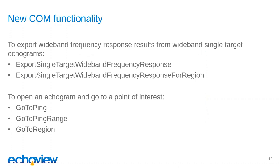Moving on to new COM functionality in EchoView 9: we have two new exports relevant to wideband frequency response — Export Single Target Wideband Frequency Response, and the same but for regions. The first is for echograms and the second for regions. This allows you to automate extracting frequency response results from EK80 data, so you can write scripts to extract this information for further analysis rather than doing it manually.